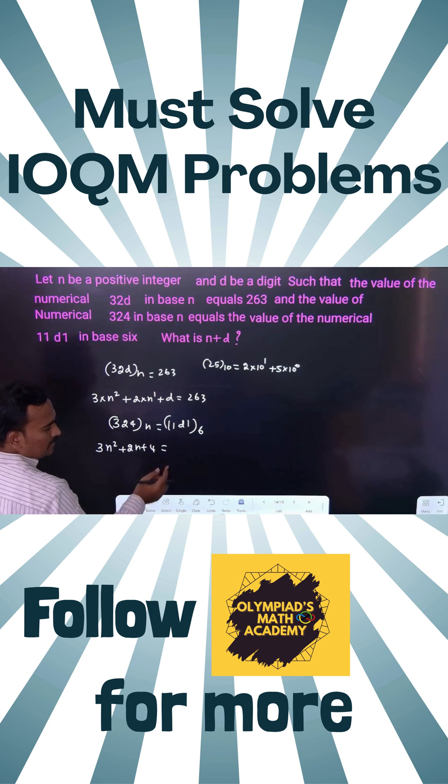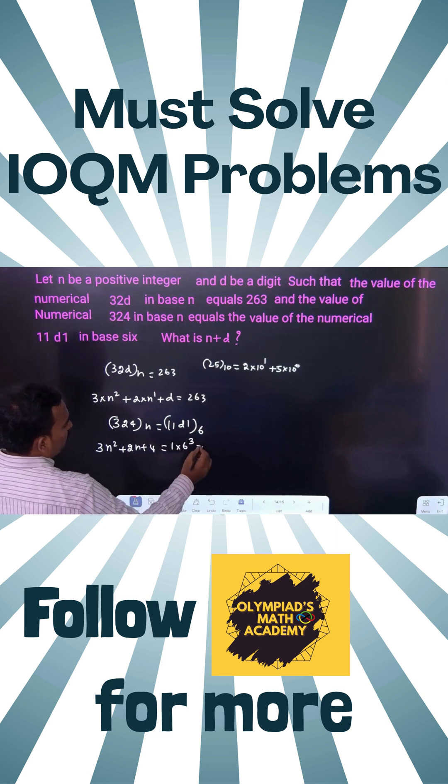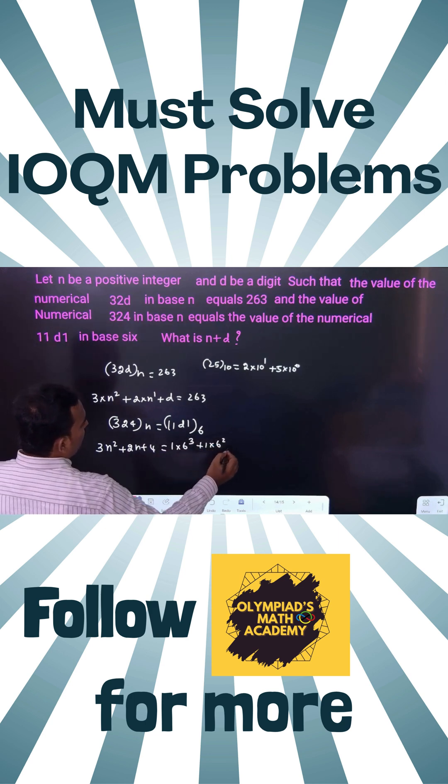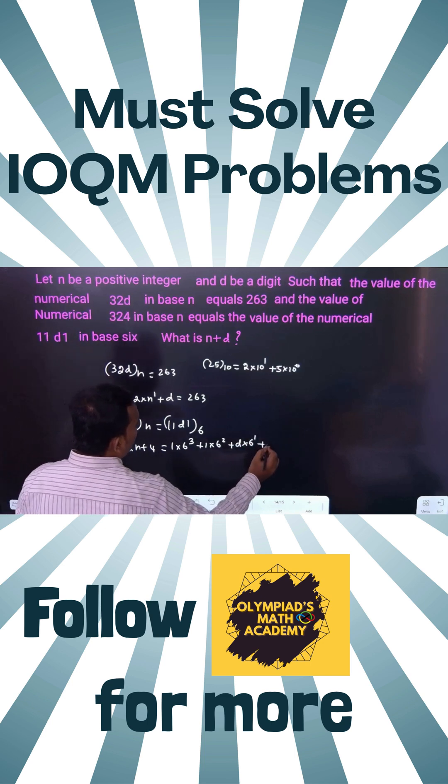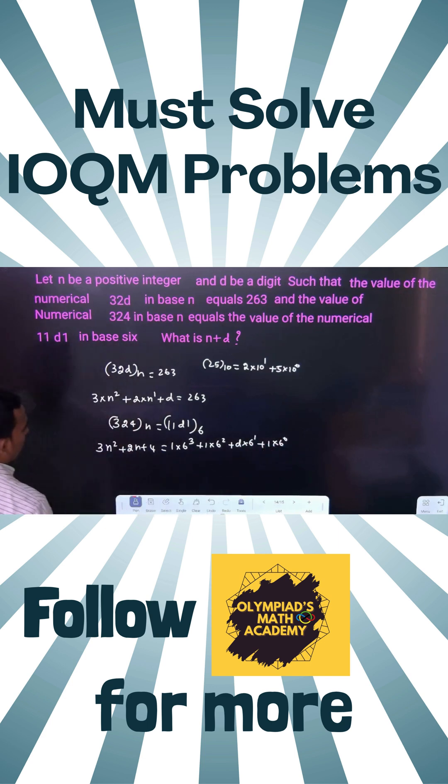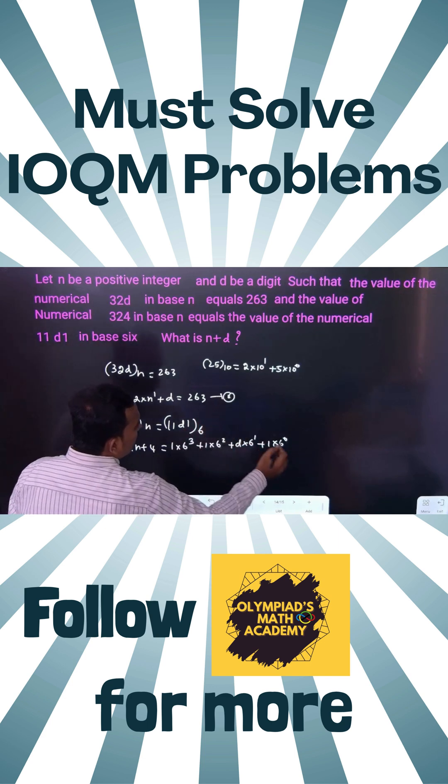Here four digits, reduce by 1: 1 times 6³ plus 1 times 6² plus d times 6¹ plus 1 times 6⁰. Let us take this as the first equation and this as the second equation.